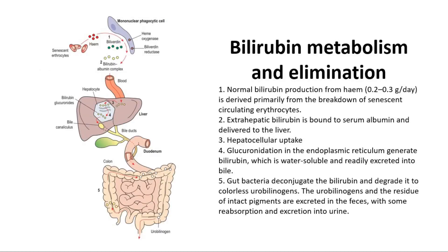Let's look at the pathway of metabolism and elimination of bilirubin. Normal bilirubin production from heme is derived primarily from the breakdown of senescent circulating erythrocytes. The heme is converted to biliverdin through heme oxygenase enzyme, and then the biliverdin is converted to bilirubin through the biliverdin reductase enzyme. Extrahepatic bilirubin is then bound to serum albumin and delivered to the liver.